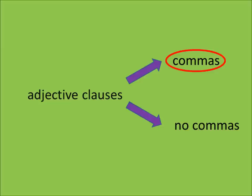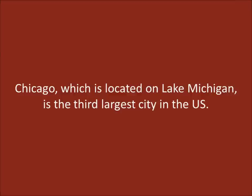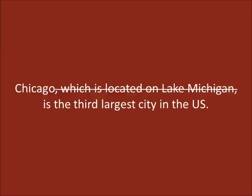The other possibility is an adjective clause that does require commas. Here's our first example: Chicago, which is located on Lake Michigan, is the third largest city in the US. We can see that the adjective clause here is 'which is located on Lake Michigan.' To explain why we use commas in this adjective clause, let's look at what happens if we remove it. We get: Chicago is the third largest city in the US. That still makes sense and gives us useful information. So, unlike our previous example, the sentence does not need this adjective clause in order to work — it just gives us extra information.